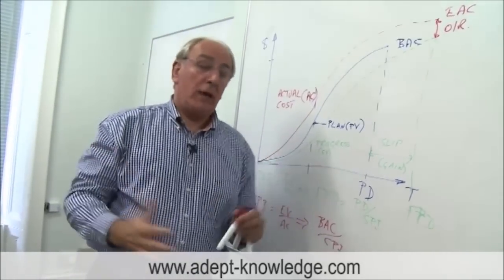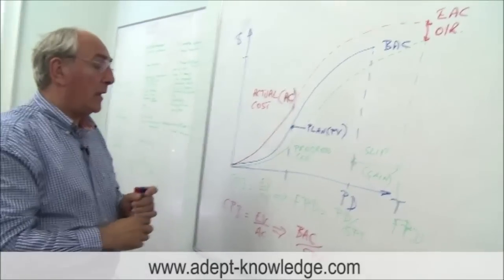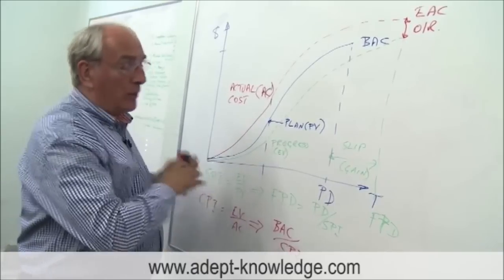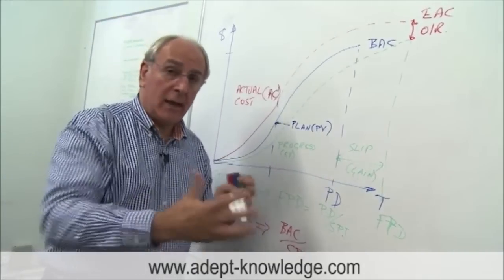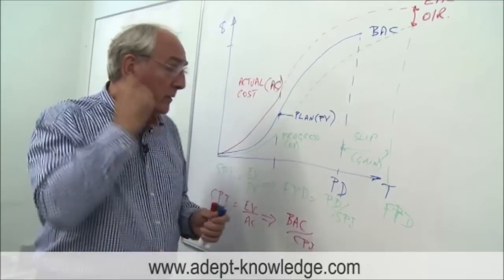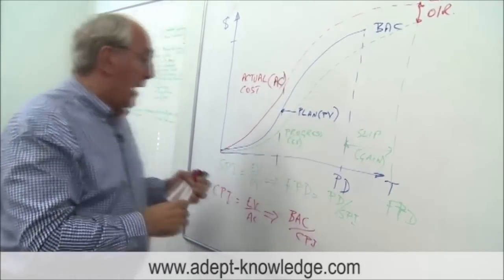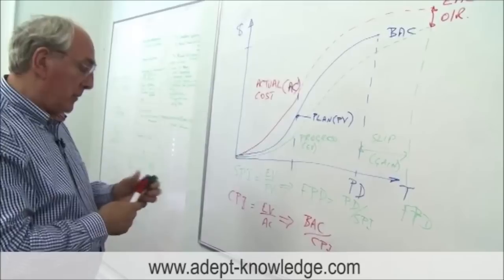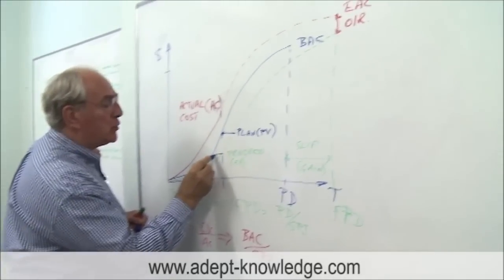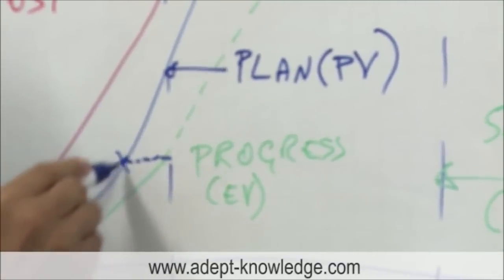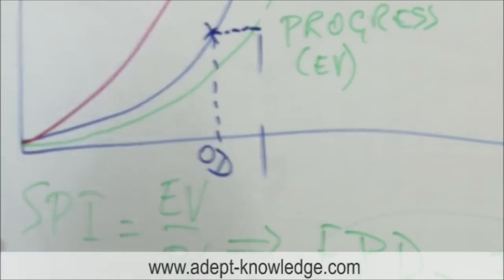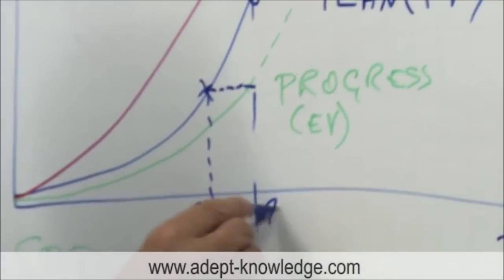There are some simple objections to this first index, the schedule performance index, and the objection to it is a philosophical one. Why use a ratio of costs or a vertical ratio when really what you want to do is to estimate something in time or horizontally? So in the British standard they've got a much better version of this that's been around since about 2002 and we talk about the relationship in time. Some people call that the earned schedule. We could say that we would have achieved or should have achieved that earned value at that point in time. We drop that down onto the timeline it's called OD the original duration and our time is known as the time now is the actual time expended.